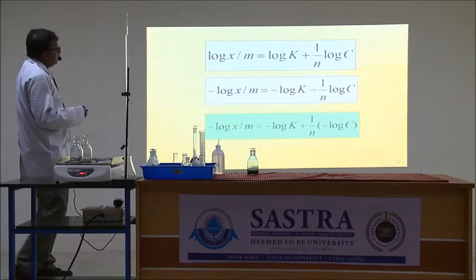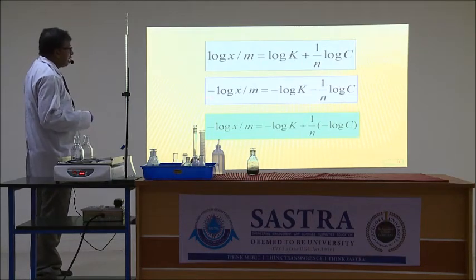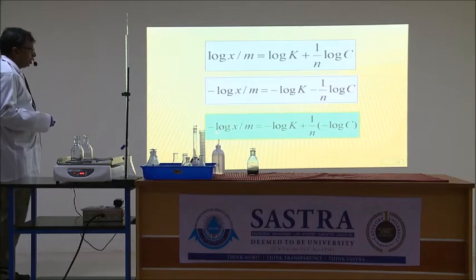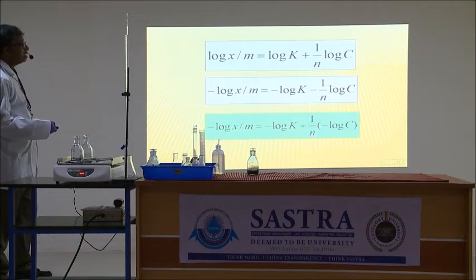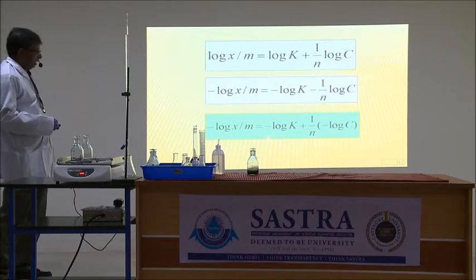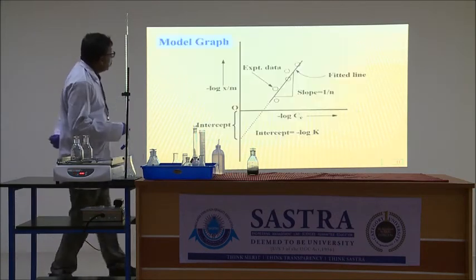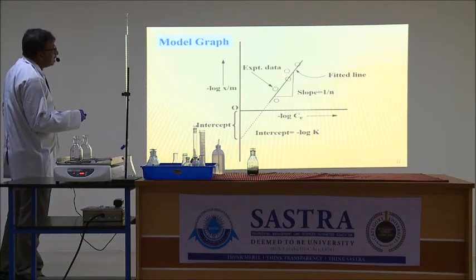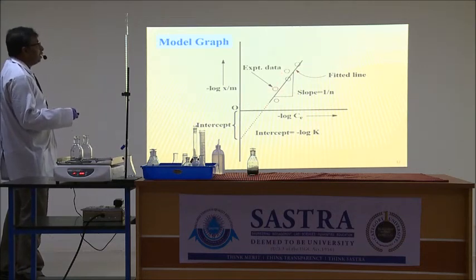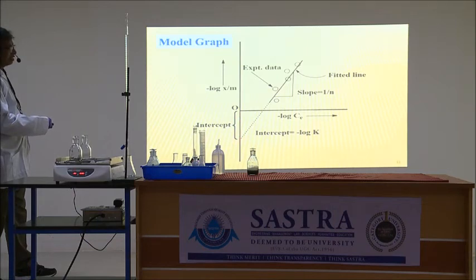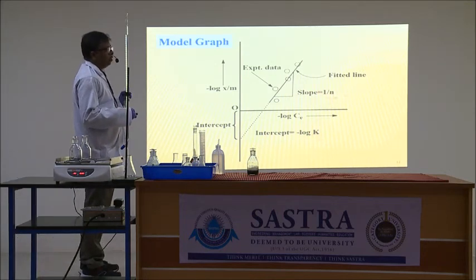The modified equation becomes: −log(X/M) = −log K + (1/N)(−log C). So −log(X/M) is used on the Y-axis, −log CE is on the X-axis, −log K is the intercept, and 1/N is the slope. These are the model graphs. We fit the experimental points through a straight line taking the maximum number of points. Where the line crosses the Y-axis gives the intercept (= −log K), and the slope equals 1/N. From the intercept and slope, we can calculate K and N.